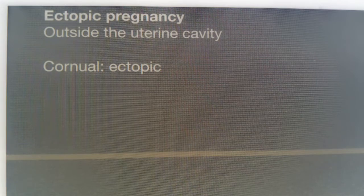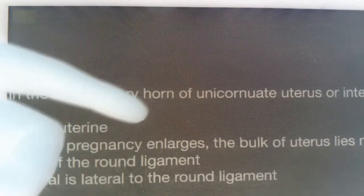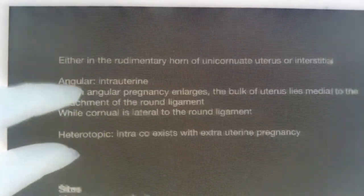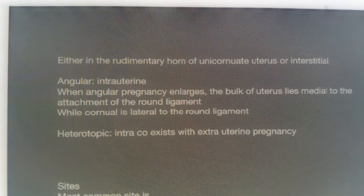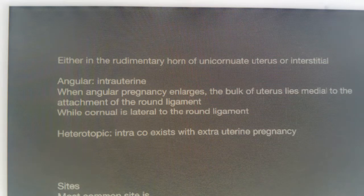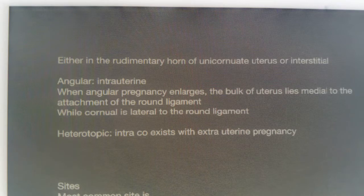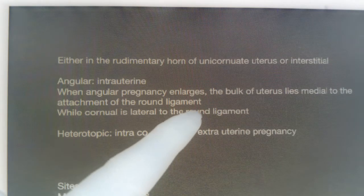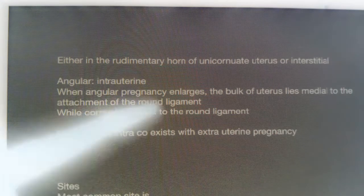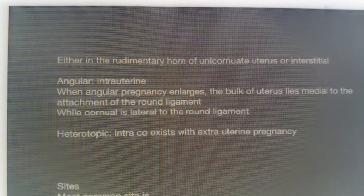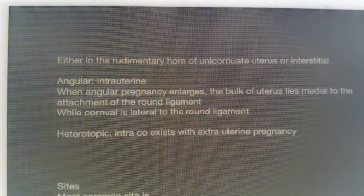Ectopic pregnancy is the presence of a gestational sac outside the uterine cavity. One important question: if the ectopic is cornual — there are two types — if the sac is in the cornu or in the angular region, is it ectopic? Angular pregnancy is intrauterine, not ectopic. Cornual pregnancy is ectopic because it lies lateral to the round ligament, while angular pregnancy lies medial to the round ligament.